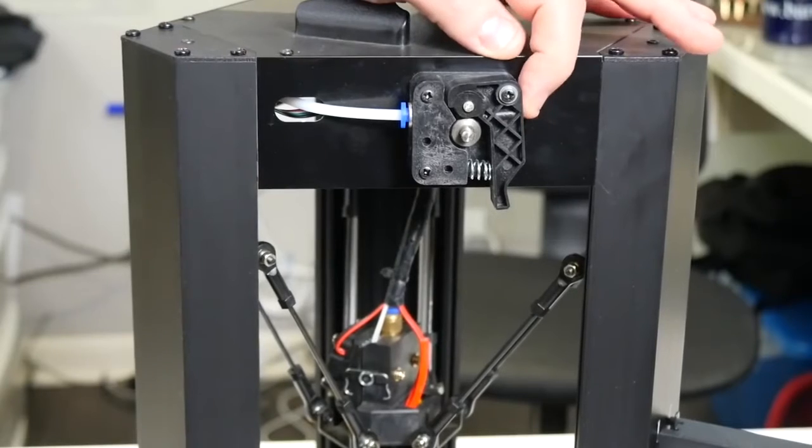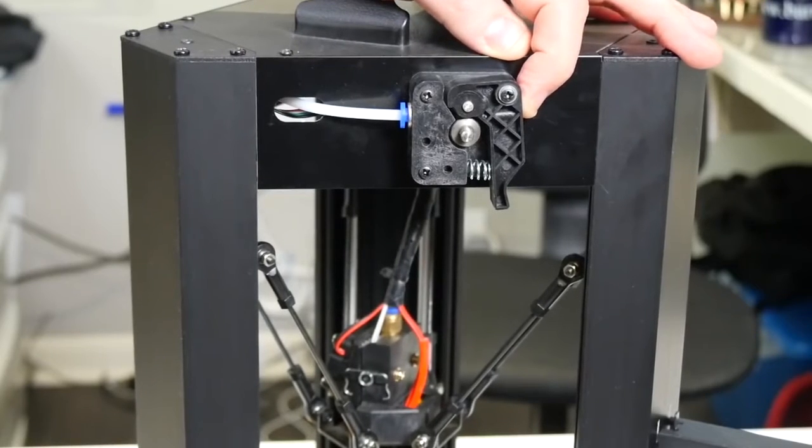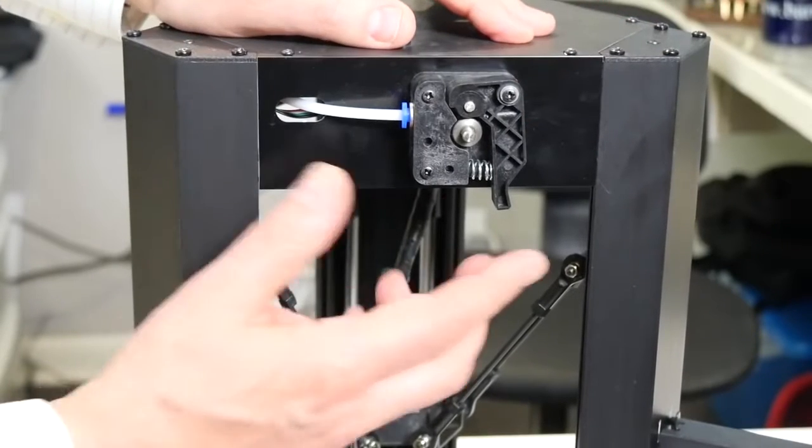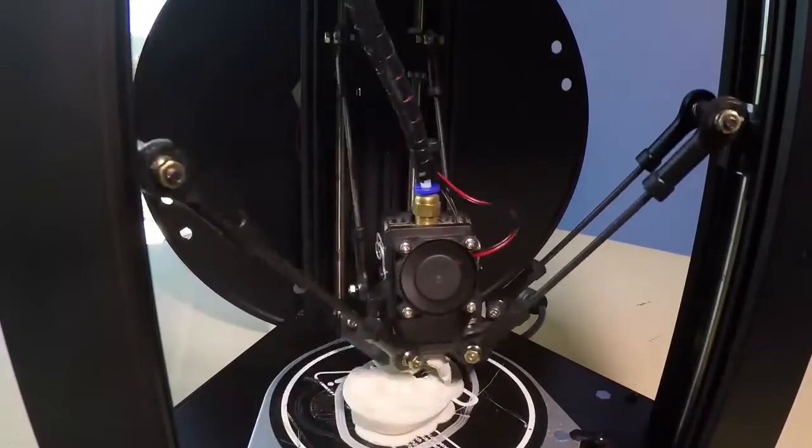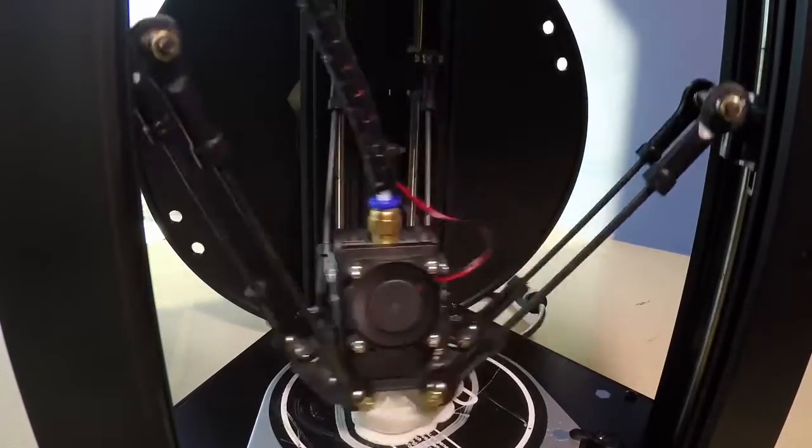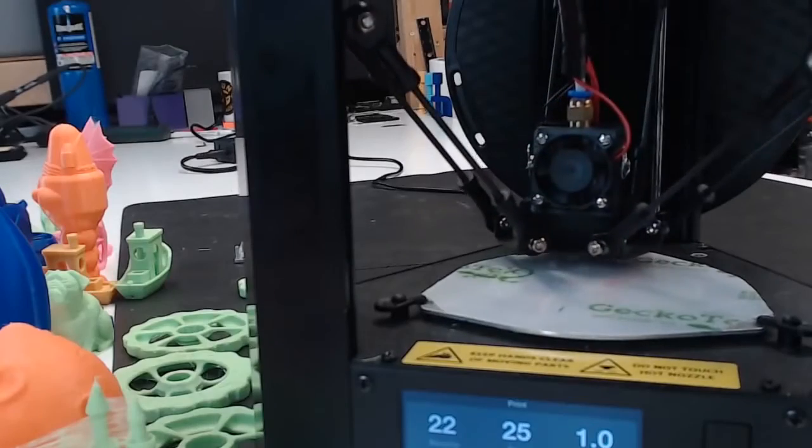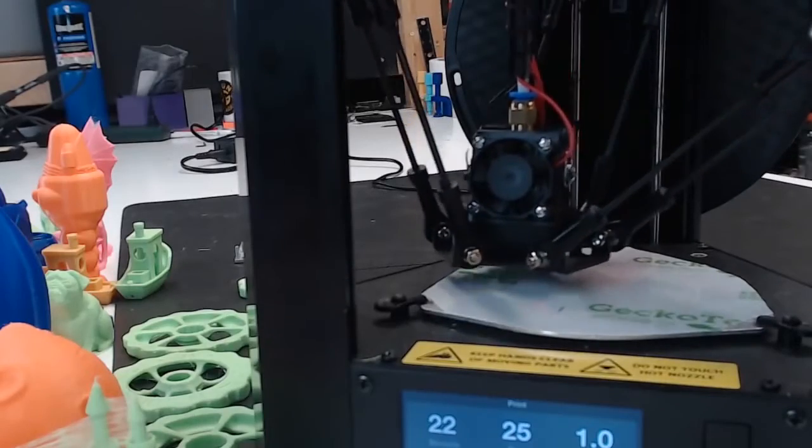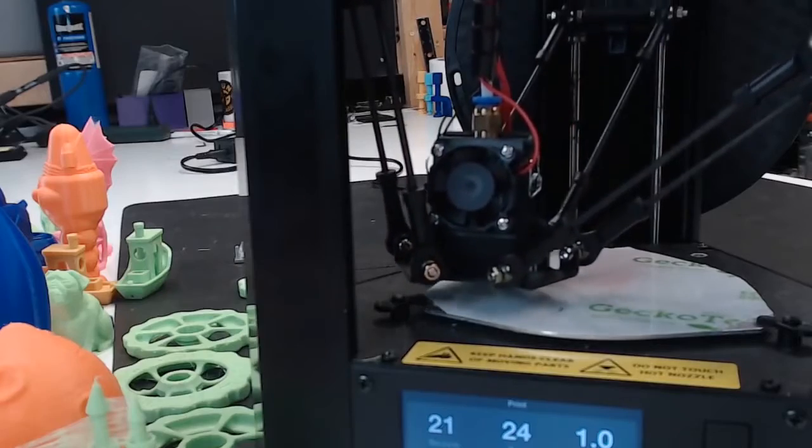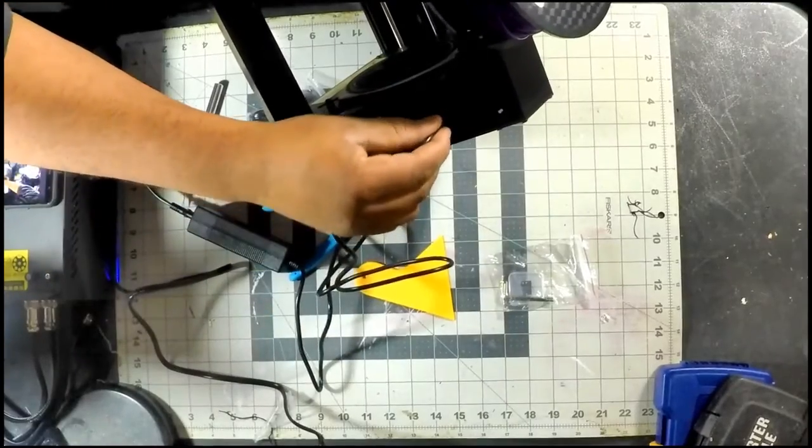The Mini Delta's printhead is held by three arms, one of which is attached to a drive belt that is turned by a motor. Three motors in the base of the printer move each of the drive belts, which in turn move the arms up and down. This movement shifts the printhead, laying down the print material on the Mini Delta's circular heated print bed.